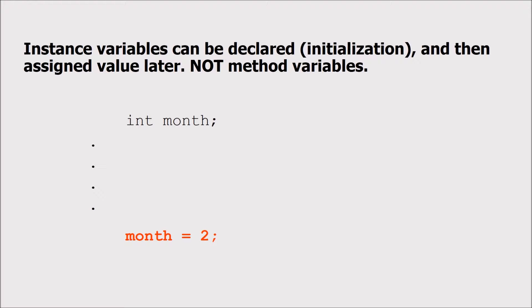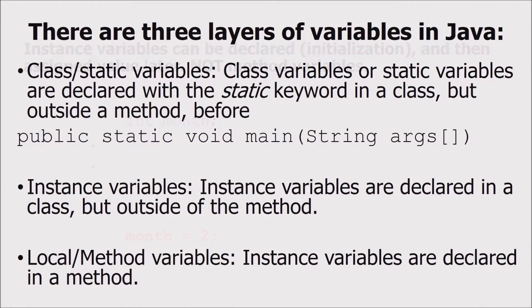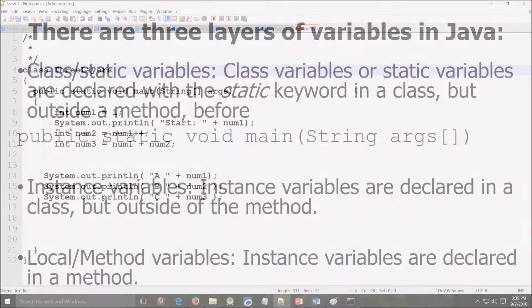Instance variables can be declared or initialized and then assigned values later. I say instance variables because there are actually three different types or layers of variables. There's the class or static variable that are declared using the word static which is a keyword in the class but outside of a method. There are the instance variables that are declared in a class but are also outside of a method. And then there are the local method variables which are declared inside of a method.